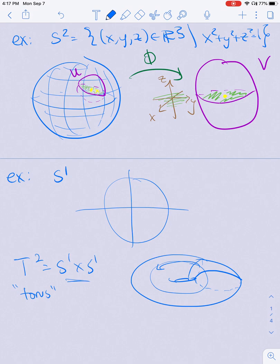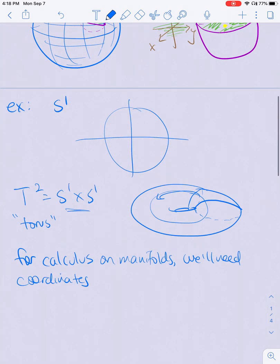There's all sorts of other examples that we'll run across during class. So what we'd like to do is be able to do calculus on these manifolds, and for calculus we're going to need coordinates. And I forgot to say the most important example is R^n is a manifold. You only need one chart, it's just all of R^n and the identity, so in this case k is just equal to n itself.